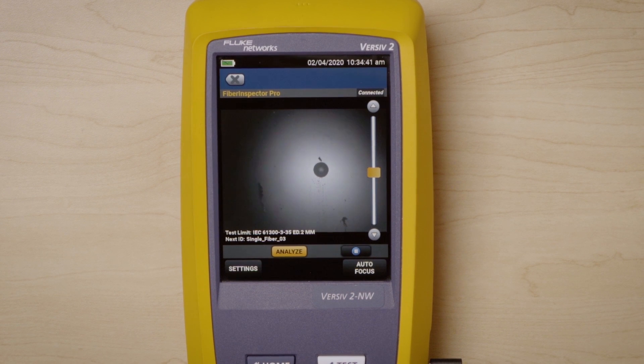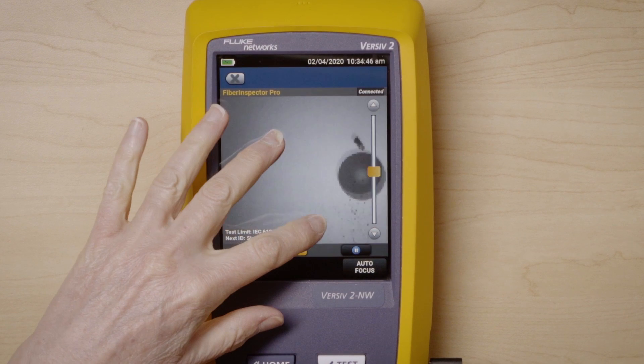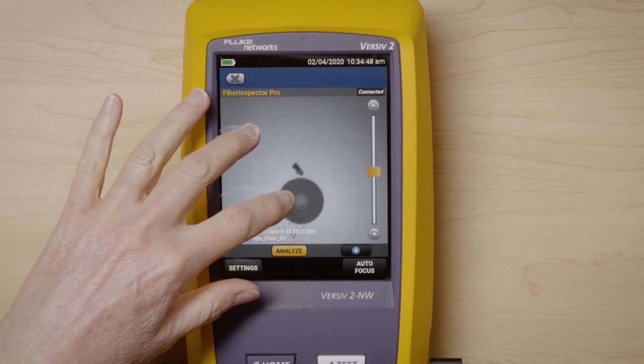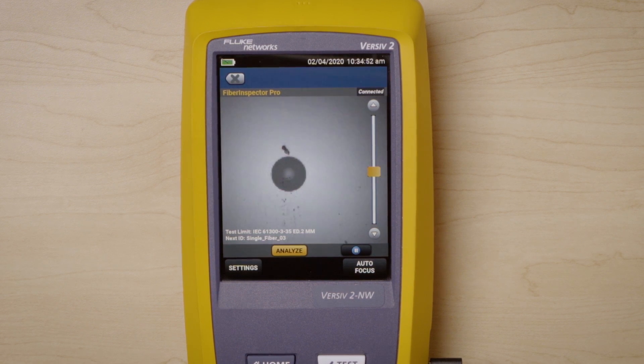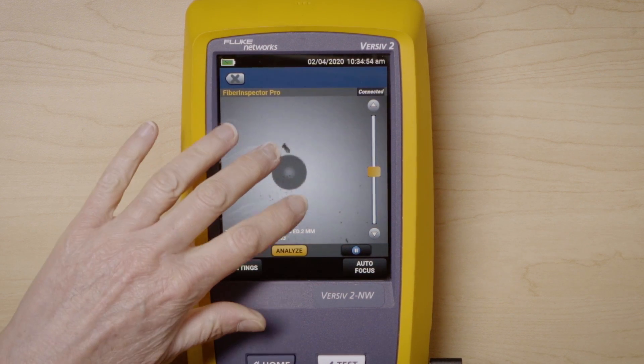One really cool thing is we have something called live view on the Fi3000. And so that means I can zoom in, I can see this in real time. So if I move this fiber, you can see that it moves in real time, which is really nice.